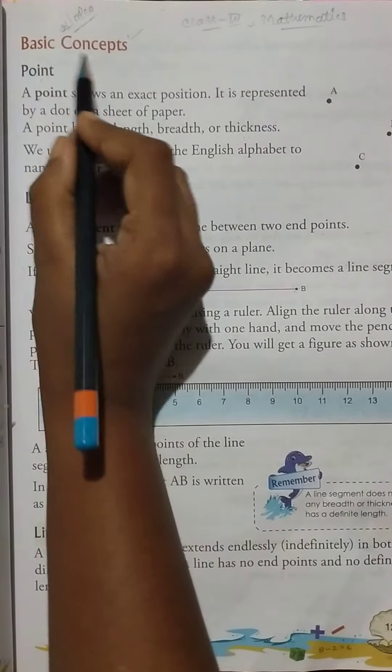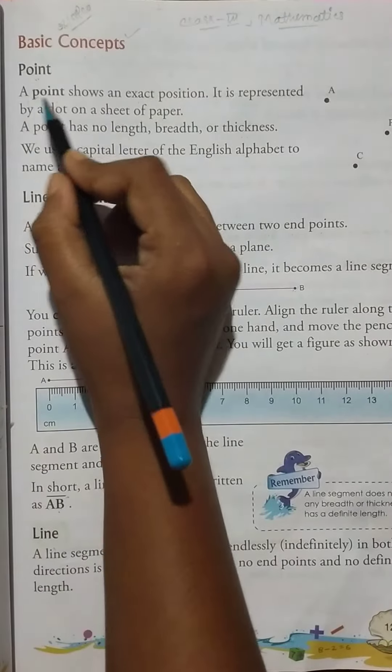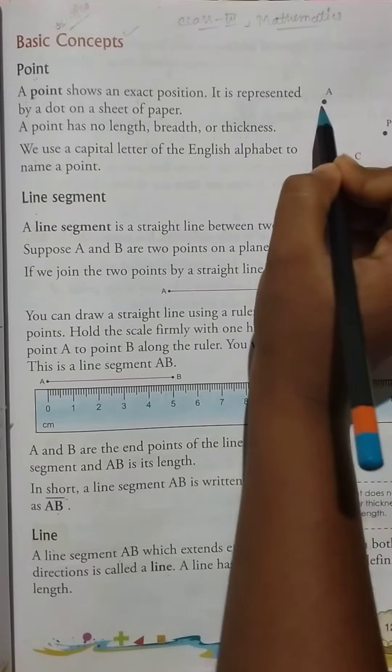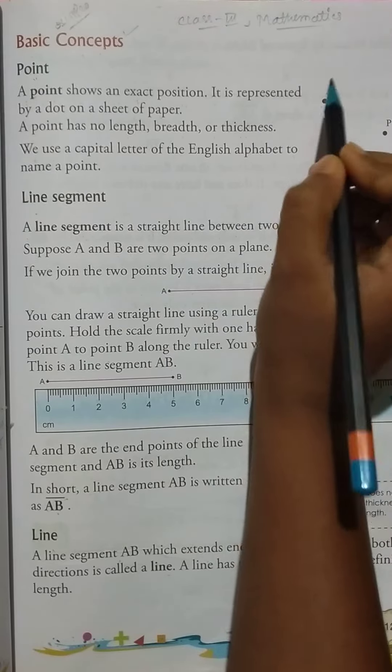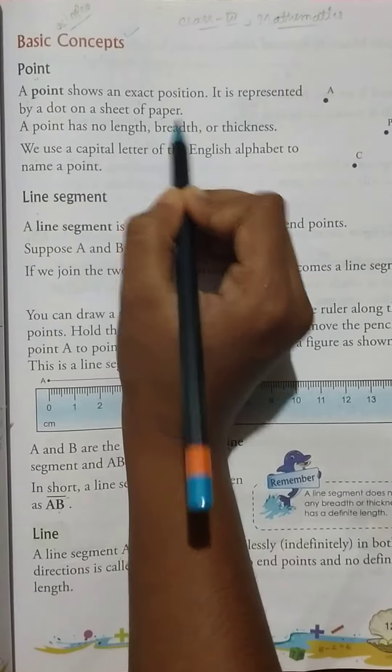So, firstly, basic concepts of point. A point shows an exact position. It is represented by a dot on a sheet of paper.